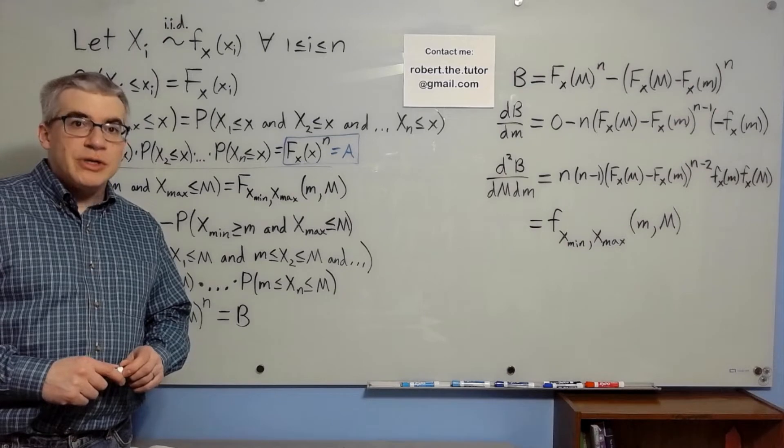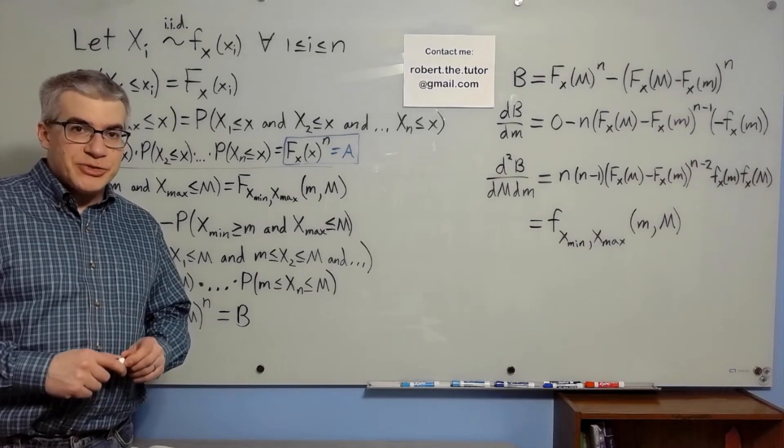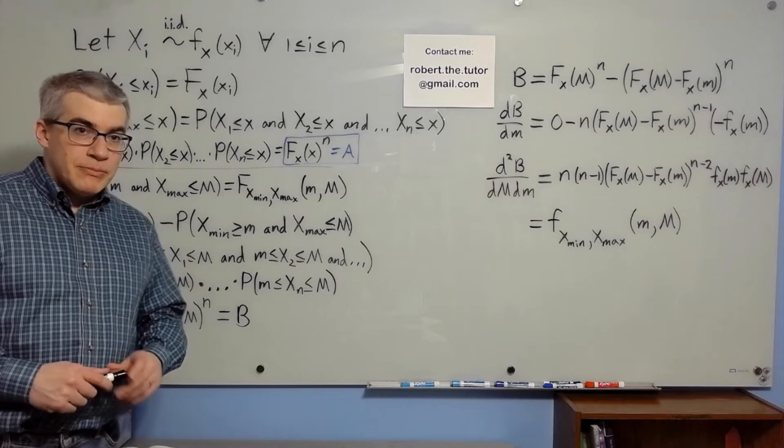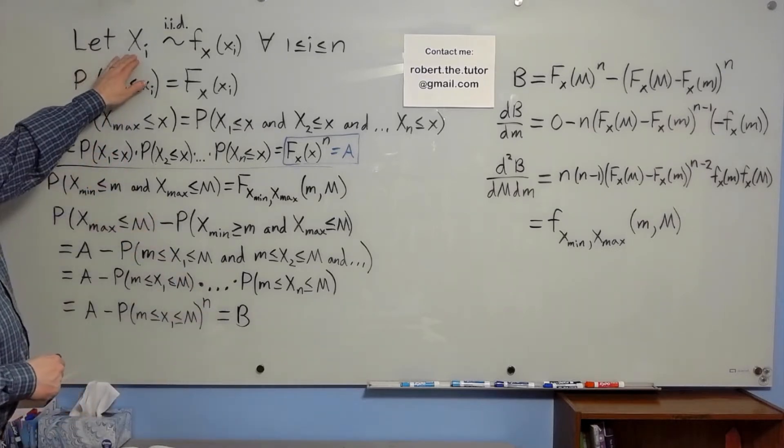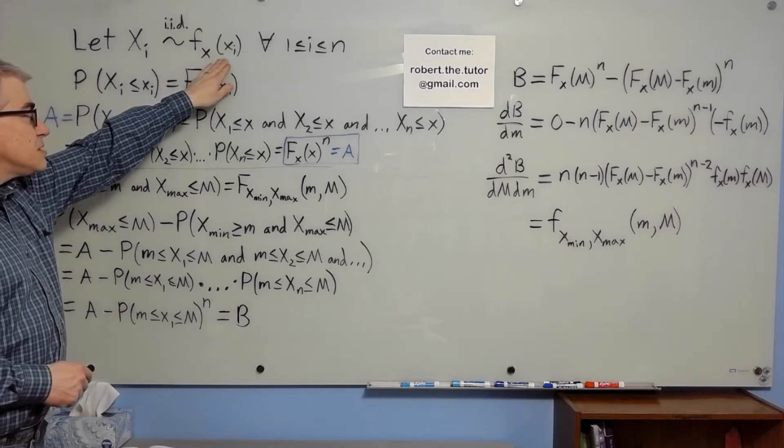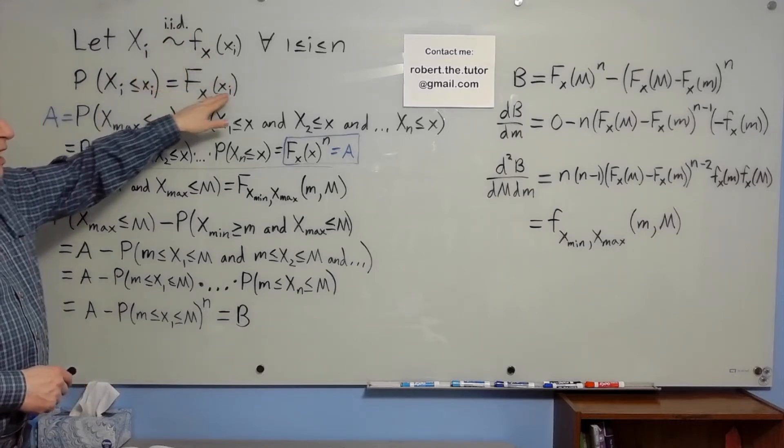Here is a derivation of the joint density distribution for the minimum and maximum of a random sample. Let the Xi be independent identically distributed with density function little fx. The CDF is big Fx.